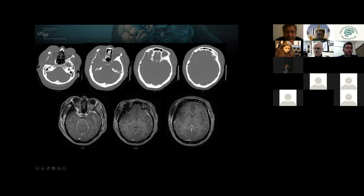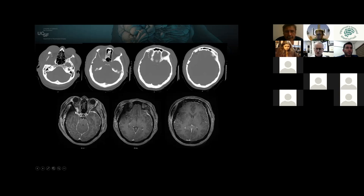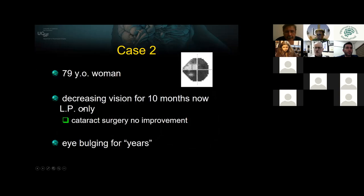You can see the soft tissue component was removed from the middle cranial fossa. We left some soft tissue in the superior orbital fissure. I do all these operations in combination with an ocular plastic surgeon who does the periorbital dissection, and even he was unable to remove the part towards the orbital apex and the muscle cone.